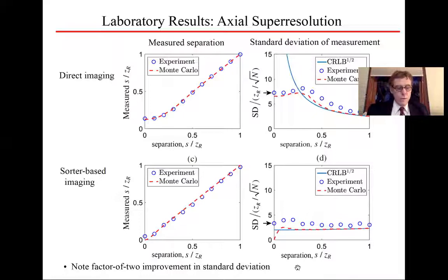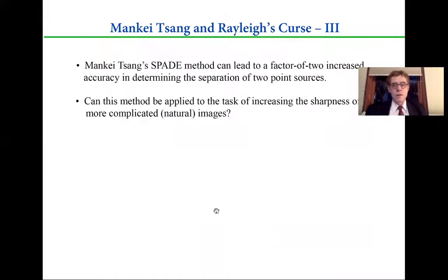But when we do this using direct imaging, at small separations, the standard deviation is about seven in these units. So we have a factor of two improvement in the standard deviation, a factor of two improvement in the ability to measure the actual separation in the presence of things like quantum noise.